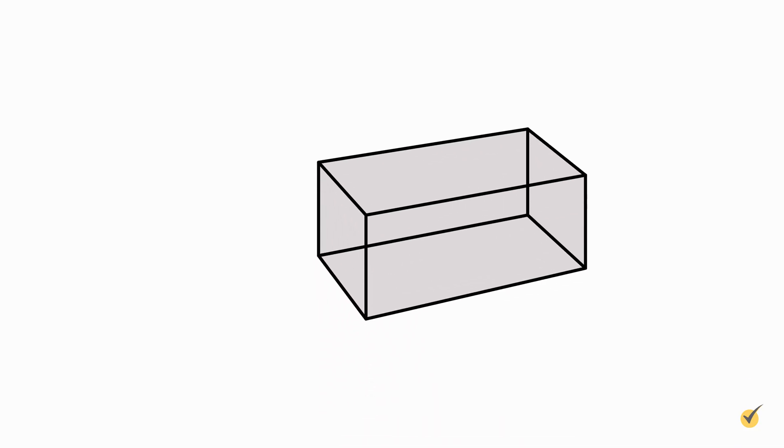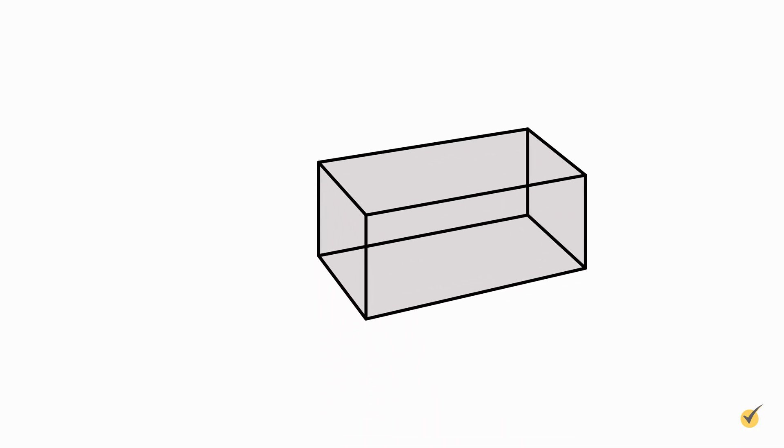A rectangular prism or rectangular solid is a six-sided object where each side, also called a face, is a rectangle. It has 12 edges and 8 vertices, and all of its angles are right angles.